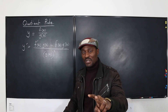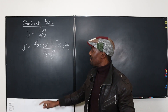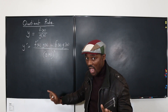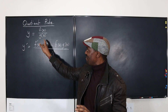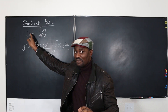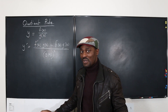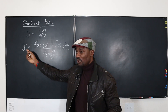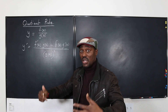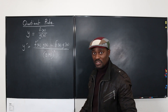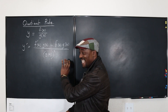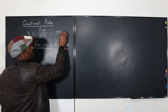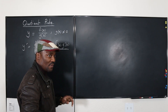Now, two things I want to talk about. The first thing is this function in itself must be such that g of x, the denominator, is not equal to zero. Because if we have a zero here, then this function is undefined, and we can't even do anything with it. And as you can see, it shows up again in the denominator for the derivative, meaning the derivative will be undefined again when the denominator is equal to zero. So g of x not equal to zero is one of the conditions here.